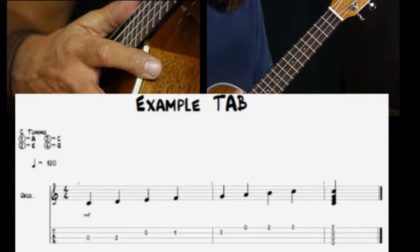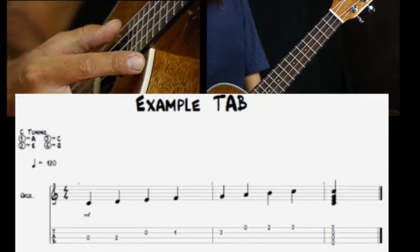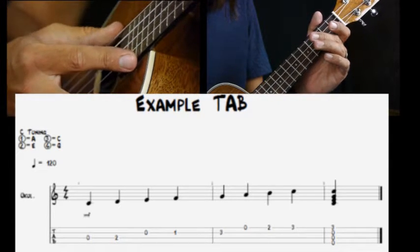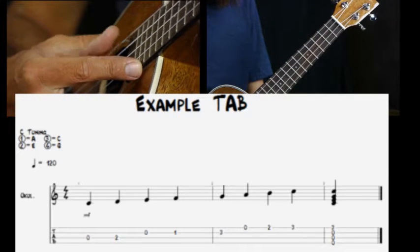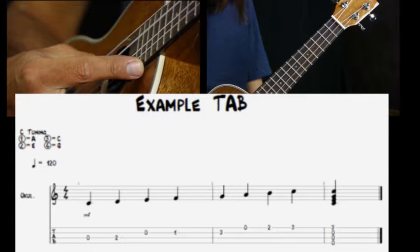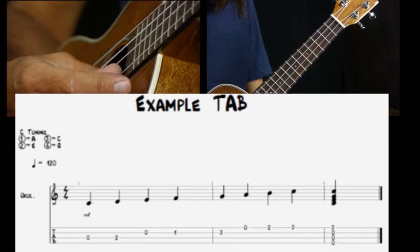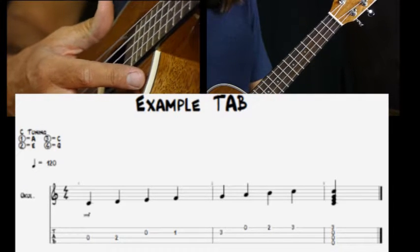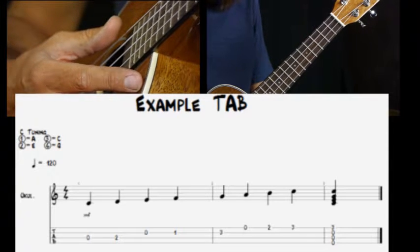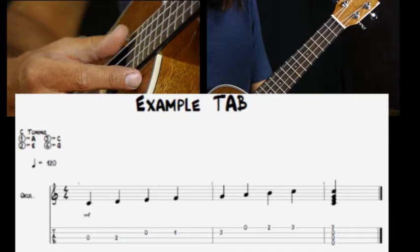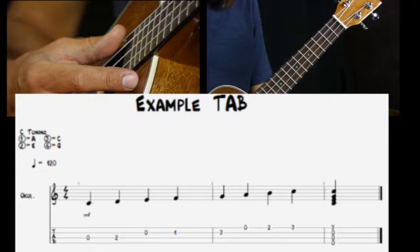The bottom line is your G string on the uke, right here. Then the next line is your C, and the next line is your E, and the next line is your A. It's kind of flipped from what you'd think it would be. So just remember the bottom line on tab is your top string, your G string on the uke.